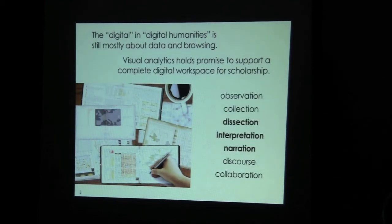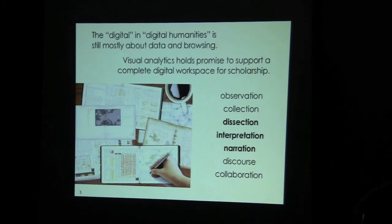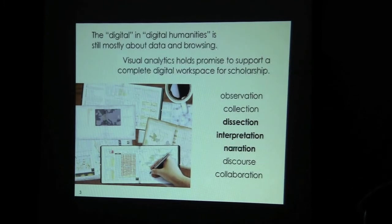I decided on a reasonable seven-bullet breakdown of some of the things that might happen — perhaps not in digital humanities in all areas, or even in computer science when studying network behavior. This is something along the lines of a scientific or scholarly process: the steps and parts one might go through in the course of one's day. I'm going to focus on three of these today: dissection, interpretation, and narration.